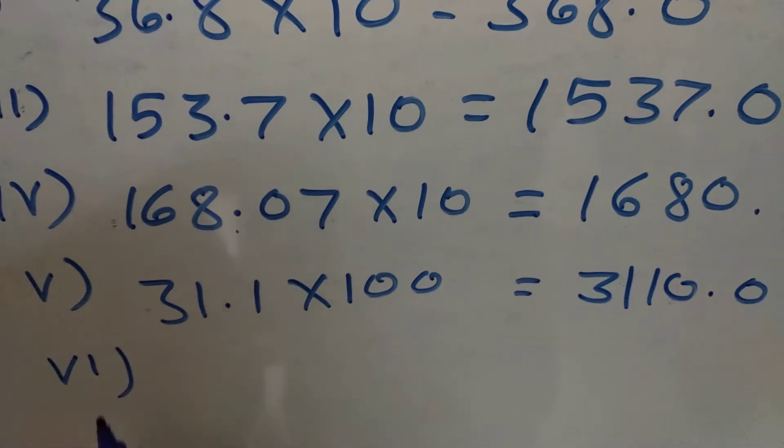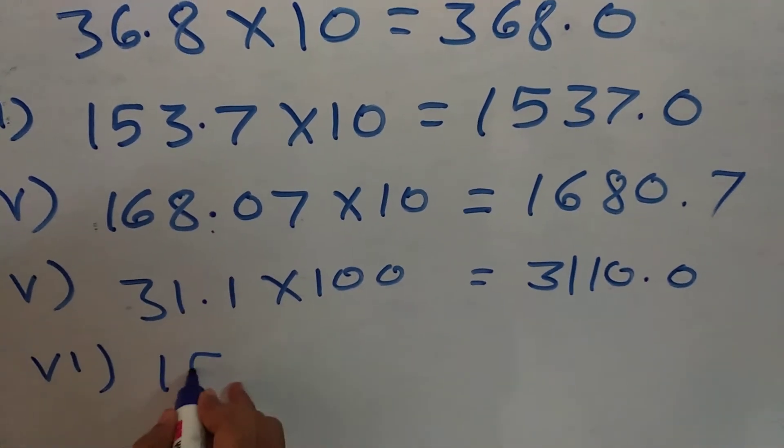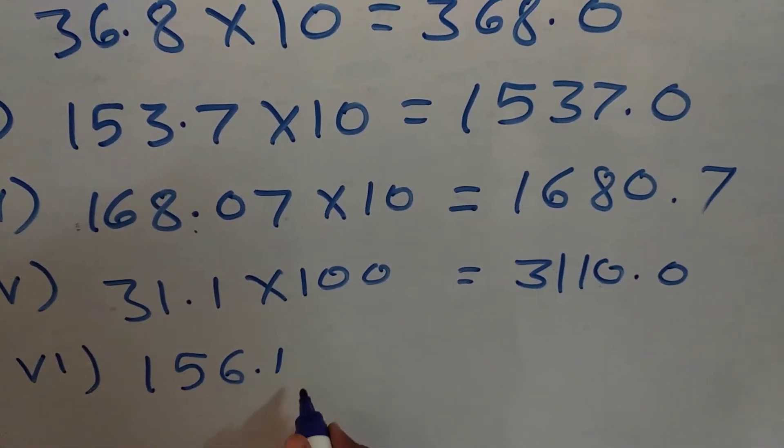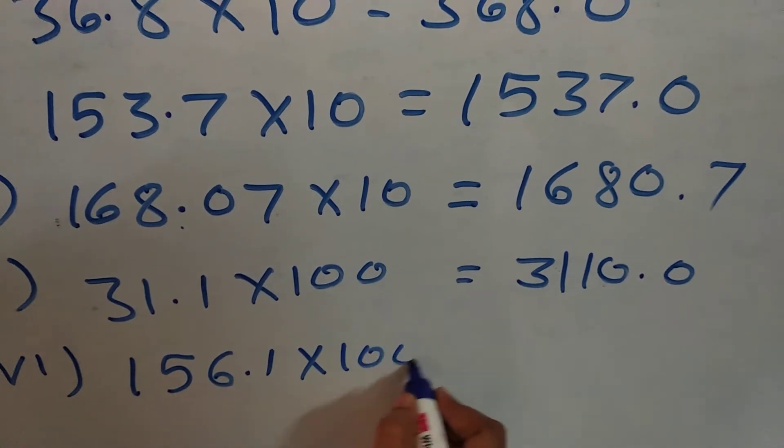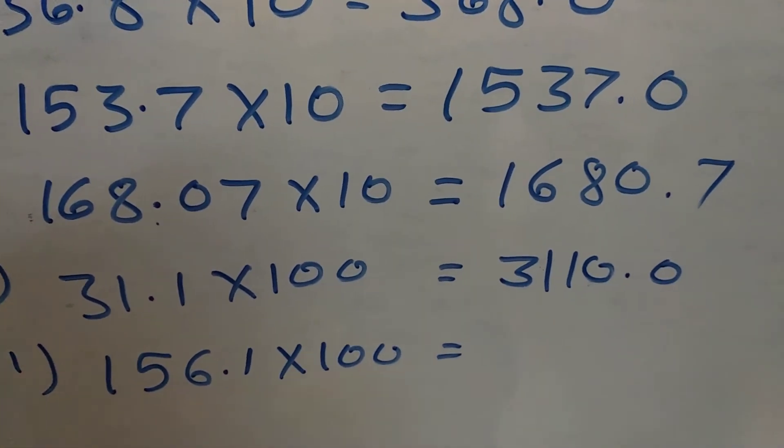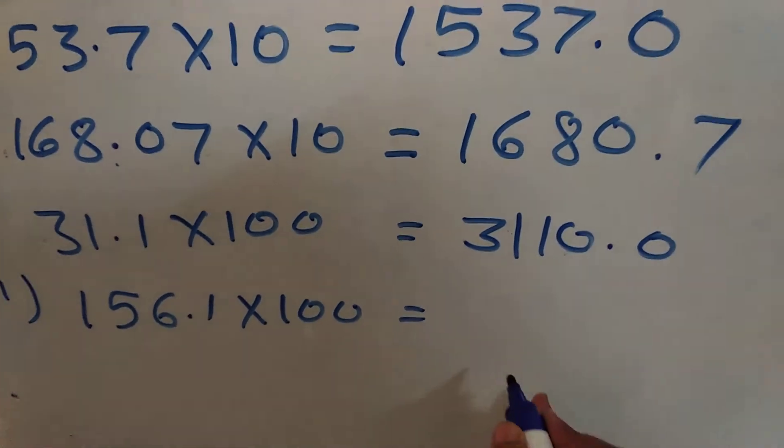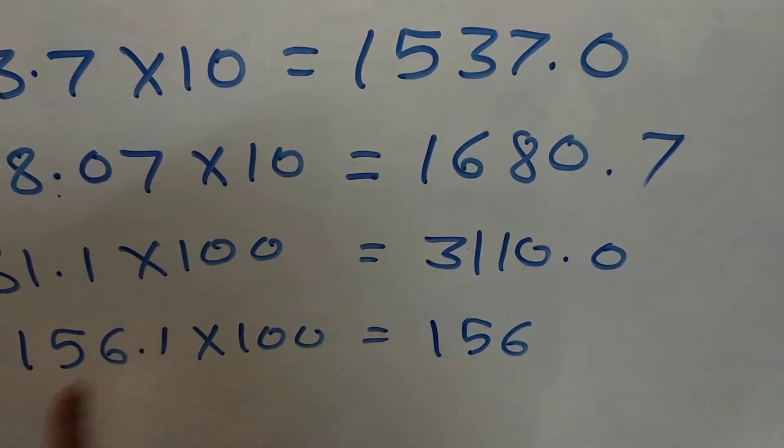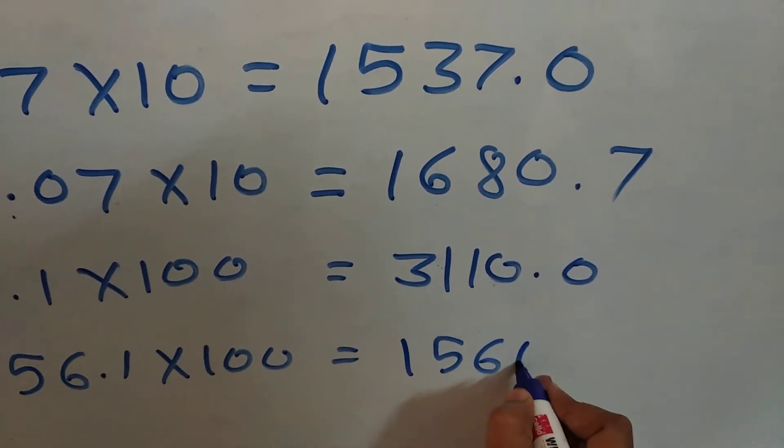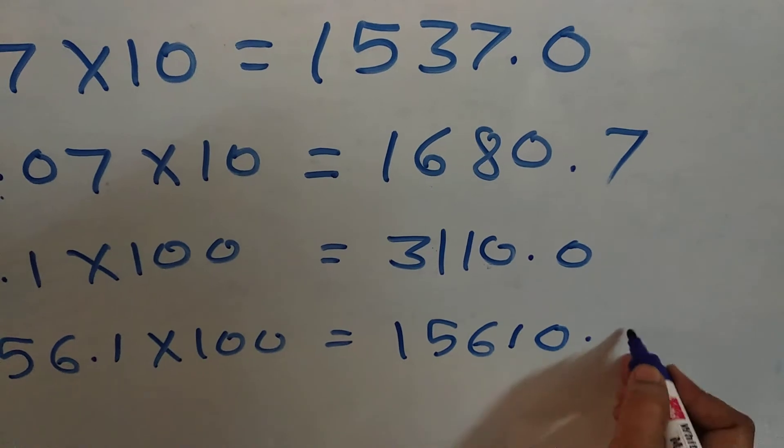Now, sixth one sum, 156.1 multiplied by 100 here. Here also, shift this side. So, 15610.0.